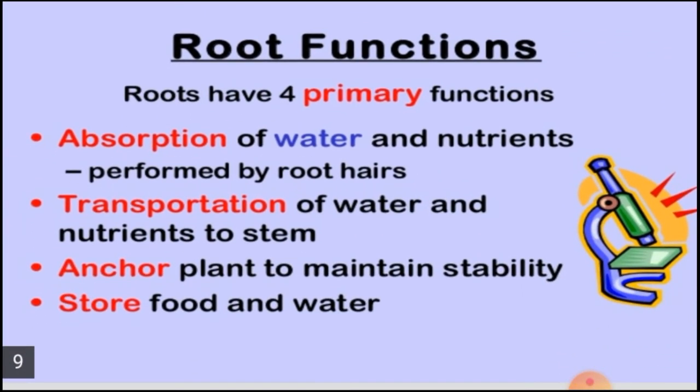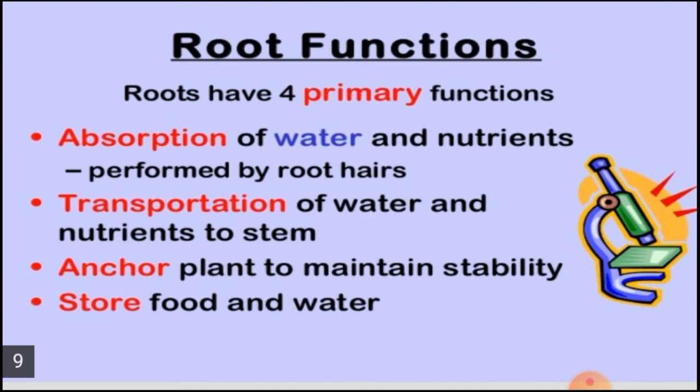Roots generally perform four primary functions. First is absorption — roots absorb water and minerals from the soil, performed by root hairs. Second, they transport water and minerals to the stem. Third, roots anchor the plant in the soil for stability and support. Fourth, in some plants, roots also store food and water.